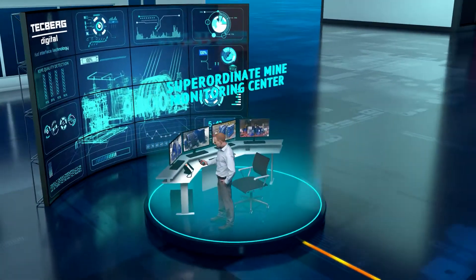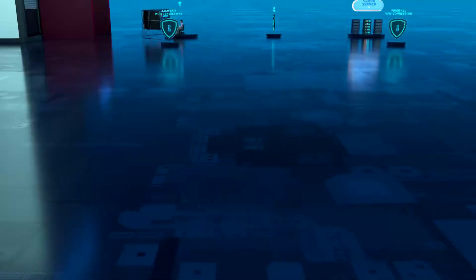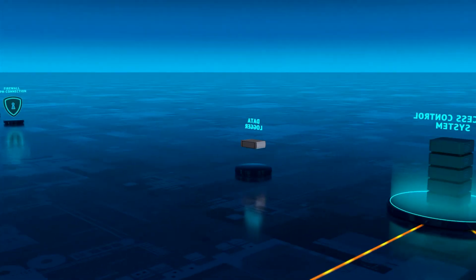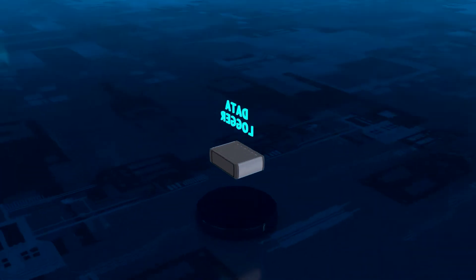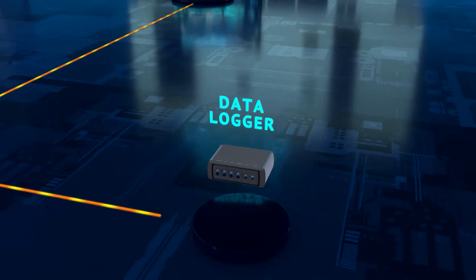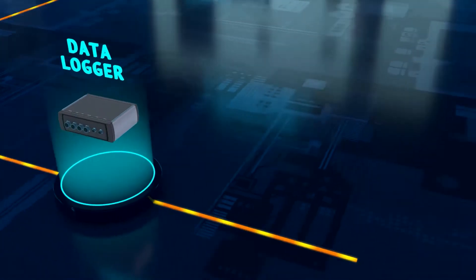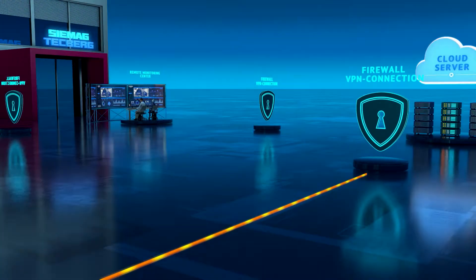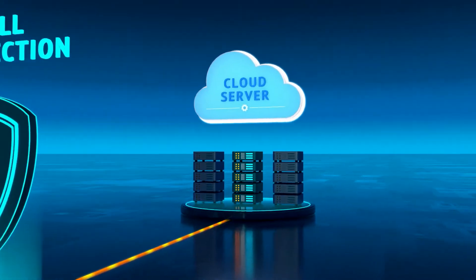Relevant sensor and machine data of the process control system are collected on site via data logger for cyclical downloading via an encoded VPN connection and transferred to a cloud server.